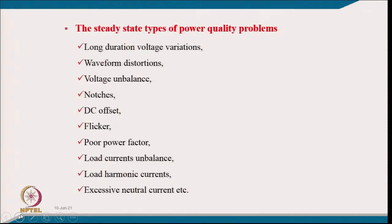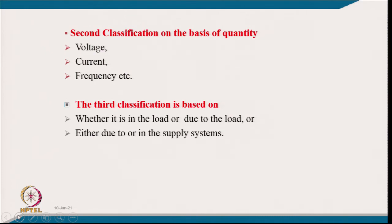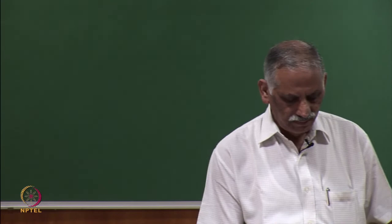The second classification of power quality problems is based on voltage, current, or frequency — problems can occur in any of these three. The third classification is based on whether the problem is in the load or due to the load, versus whether it is in the supply system or due to the supply system.